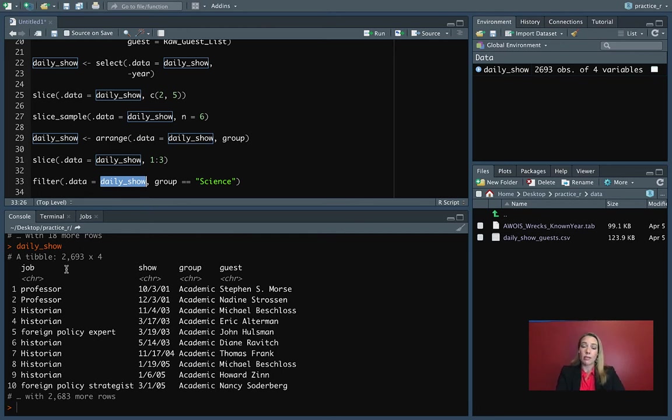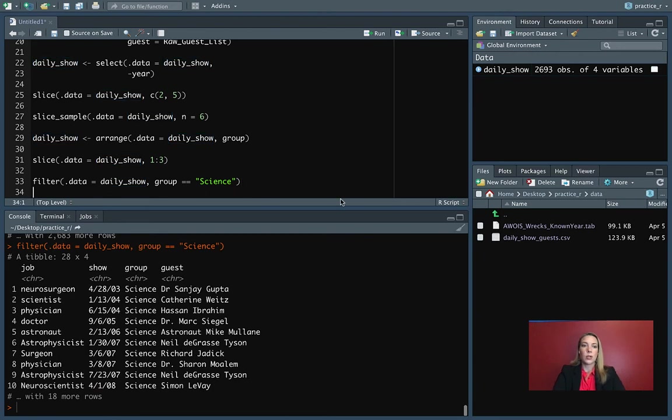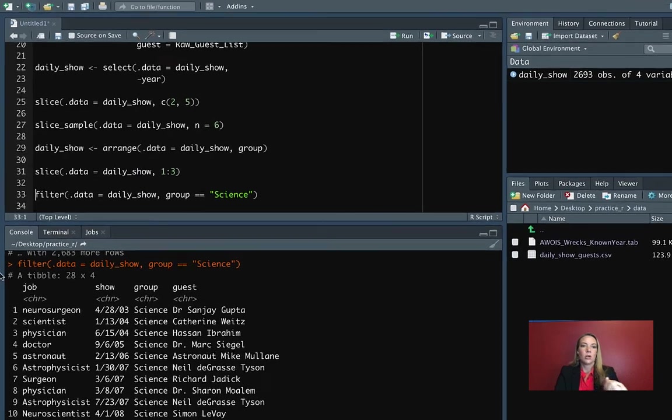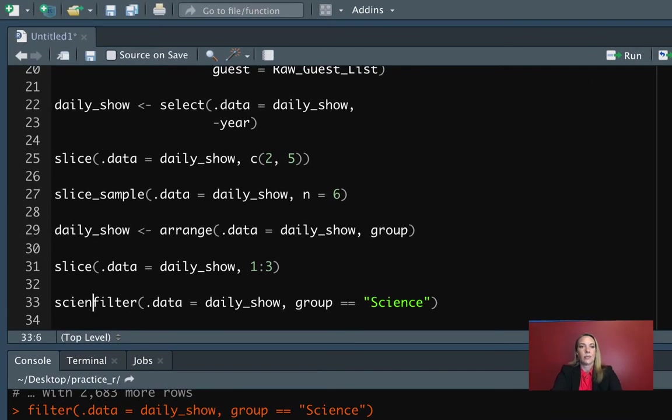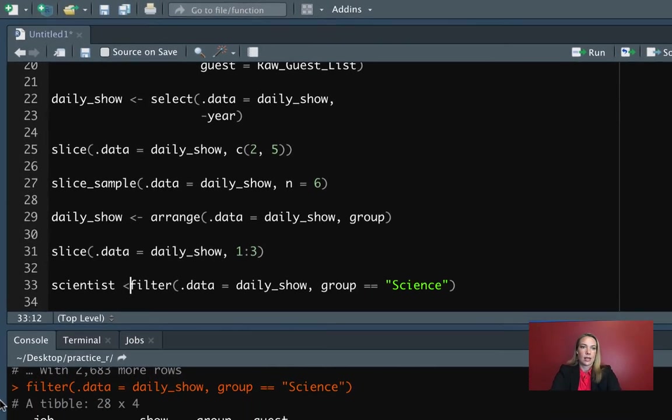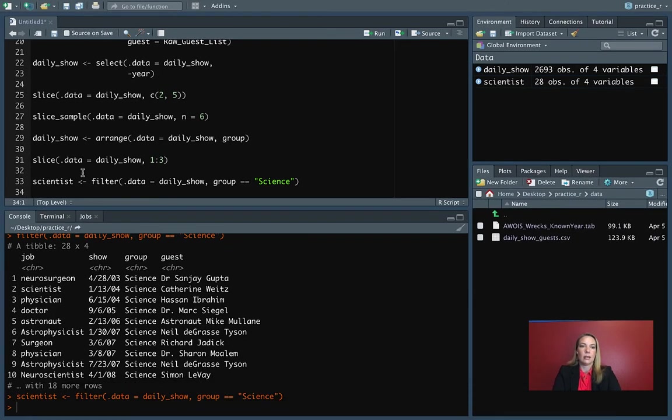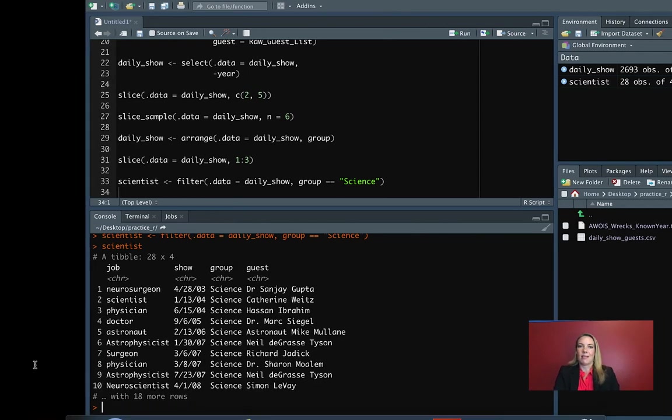When we do filter, we're getting down just to 28. So it's clearly pulled out just a small subset of our total number of columns. And then this might be a separate data frame that we want to work with later by itself. So if we want to, we can assign this its own name. So in this case, I can assign it to scientist. And then we run it. And again, if we call that object, we can see that it's printed out that same thing.